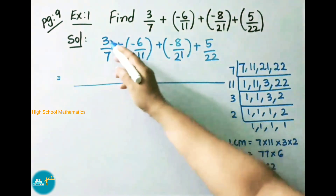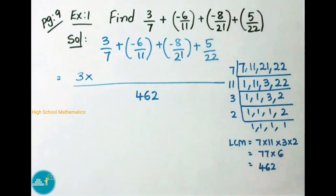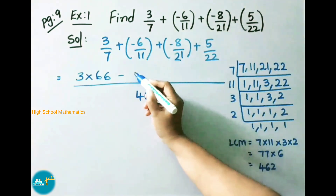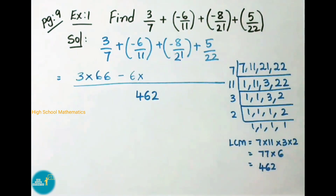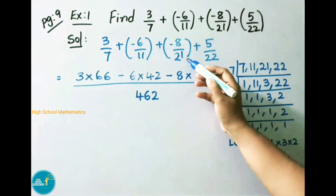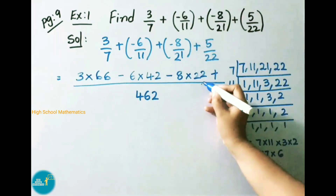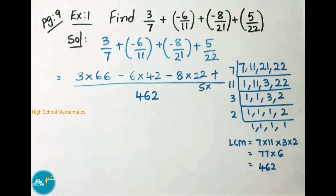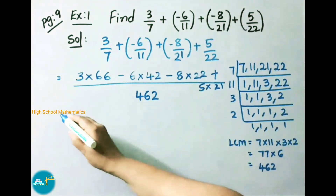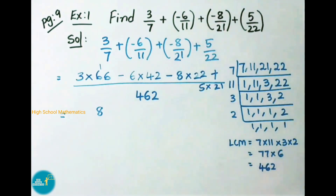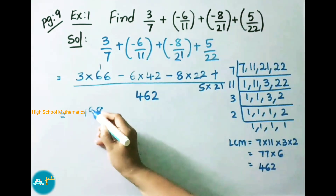Now we shall do the calculation. First, write down the numerator: 3 into 66, since 7 times 66 equals 462. So write down 66. Plus minus means minus — write down numerator 6 into 42, since 11 times 42 equals 462. So write down 42. Next, plus minus means minus. Write down numerator 8 into 22, since 21 times 22 equals 462. Now multiplying: 3 sixes are 18, so 8 carry 1; again 3 sixes are 18 plus 1 is 19. So 3 into 66 is 198.